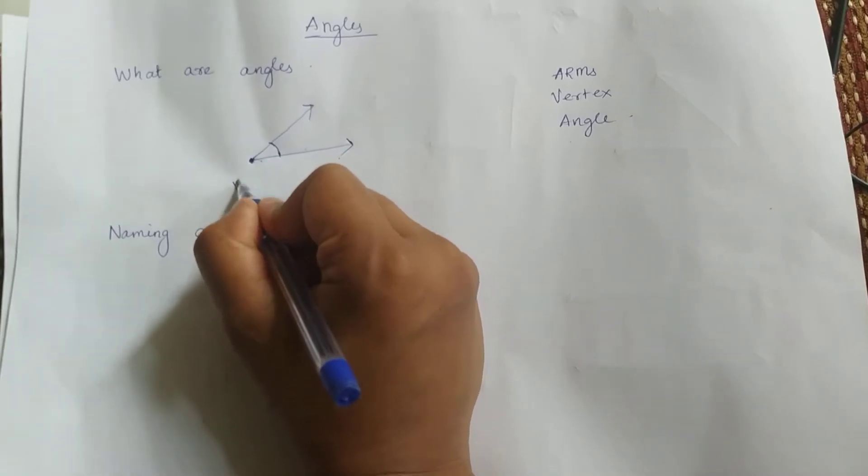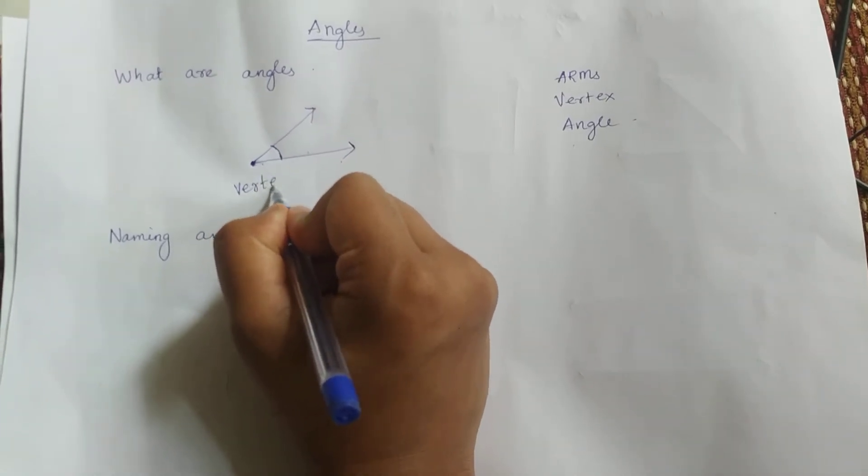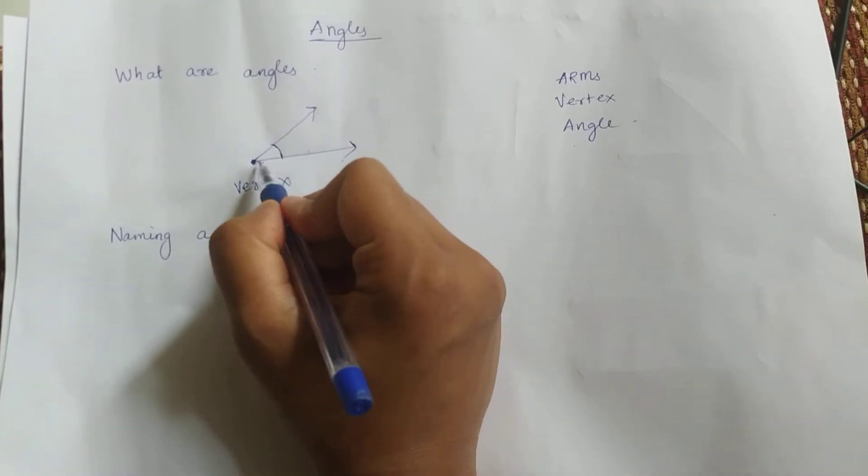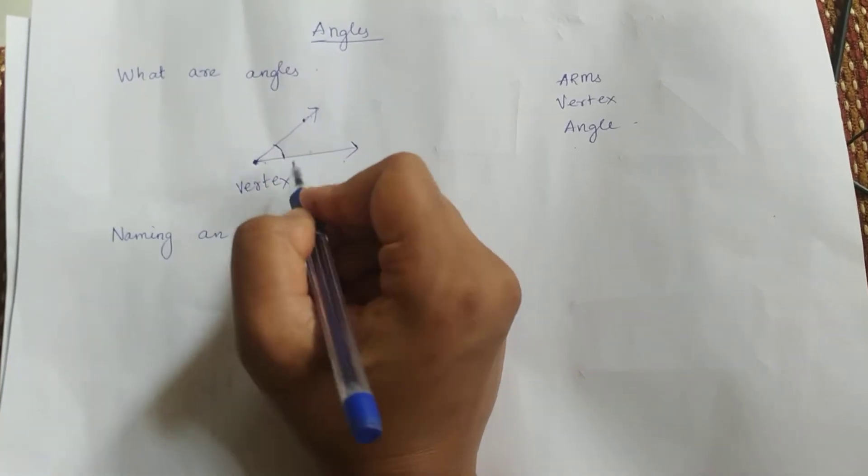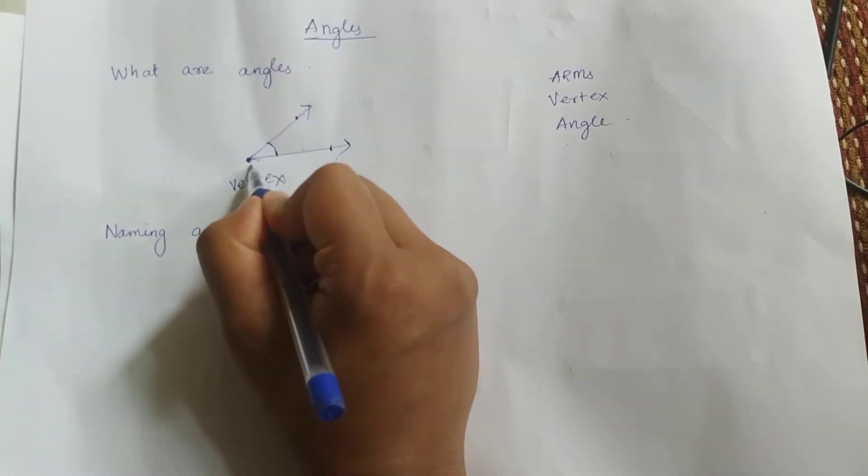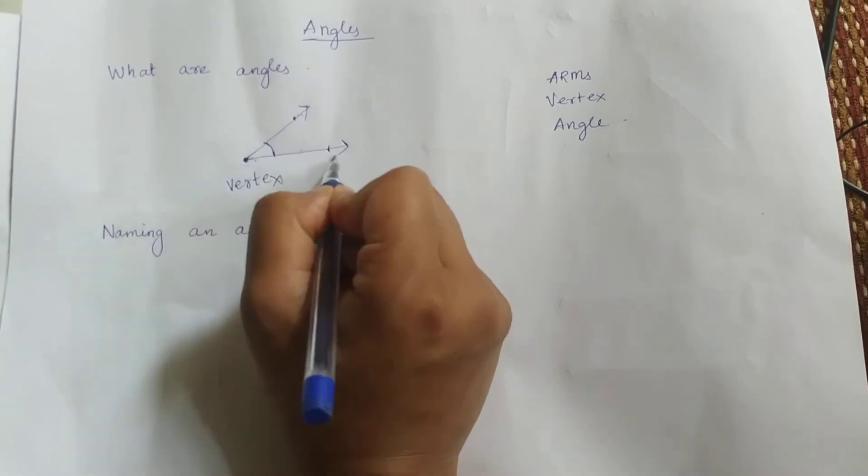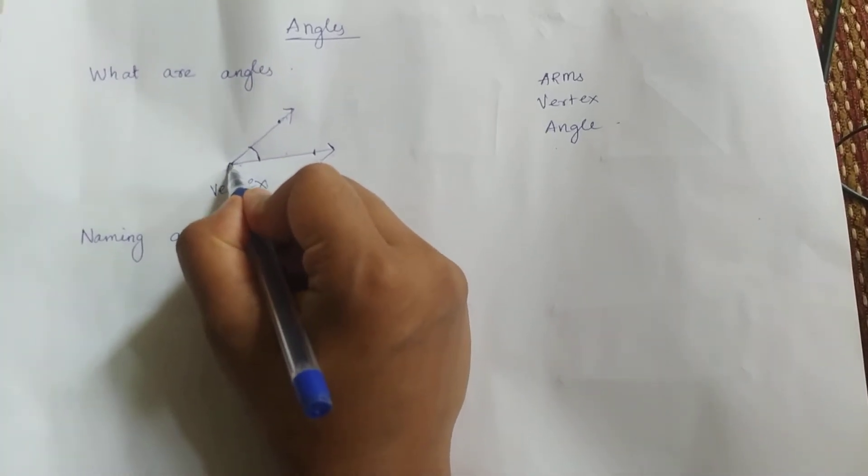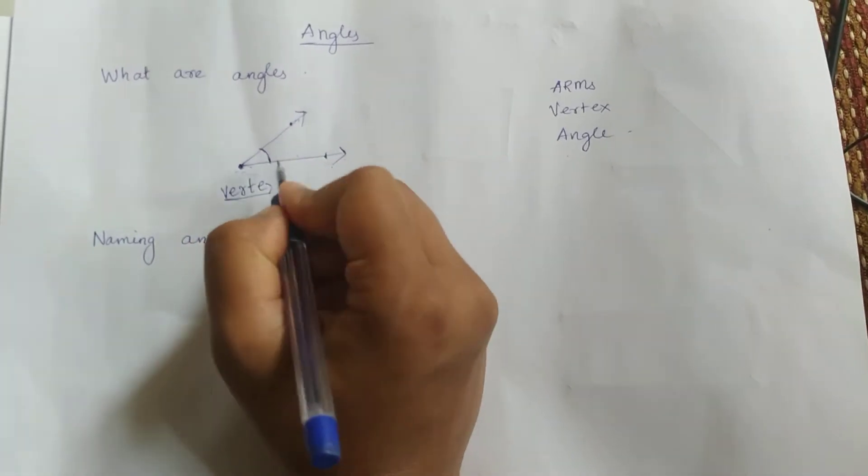This point is called the vertex. We call this the vertex. This is called an arm, and this is also called an arm. These are both arms and the area between them is the angle.